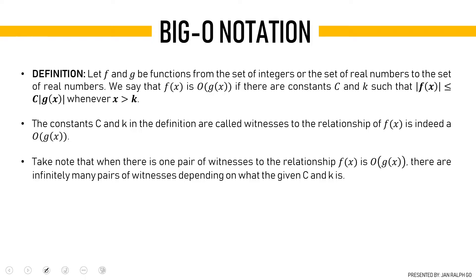The constants c and k in the definition are called witnesses to the relationship of f of x is big O of g of x. To establish such a relationship, we need only one pair of witnesses. This means that f of x is big O of g of x. Take note that when there is one pair of witnesses to this relationship, there are infinitely many pairs of witnesses depending on what the given c and k are.